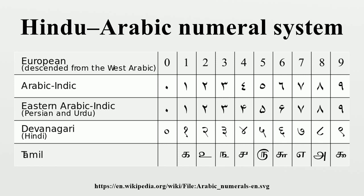The symbols used to represent the system are in principle independent of the system itself. The glyphs in actual use are descended from Brahman numerals and have split into various typographical variants since the Middle Ages. These symbol sets can be divided into three main families: Arabic numerals used in the greater Maghreb and Europe, Eastern Arabic numerals used in the Middle East, and Indian numerals used in the Indian subcontinent.